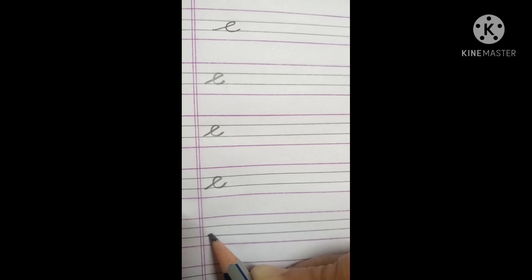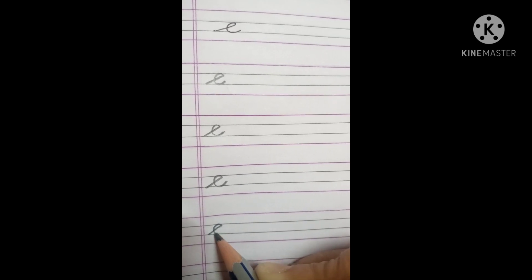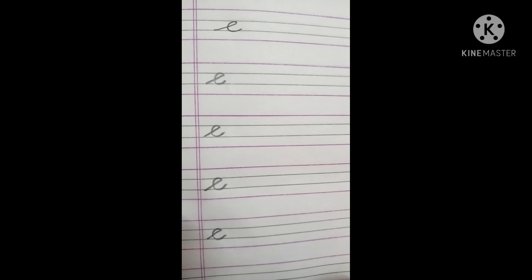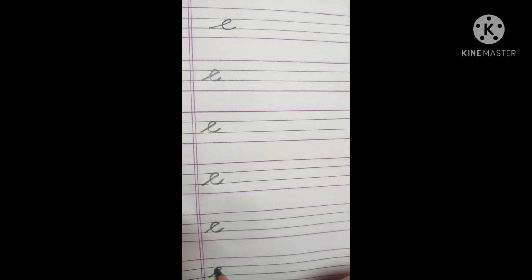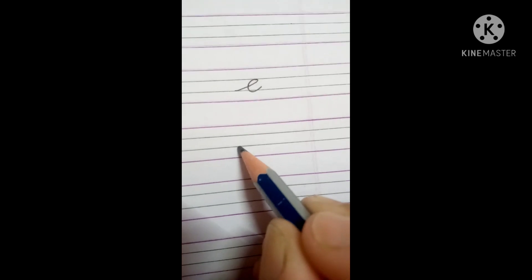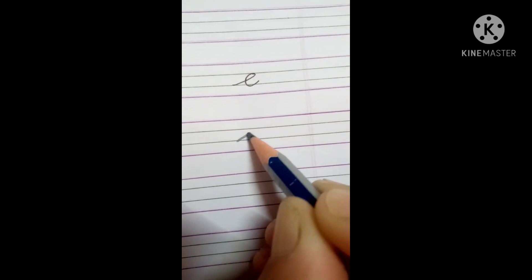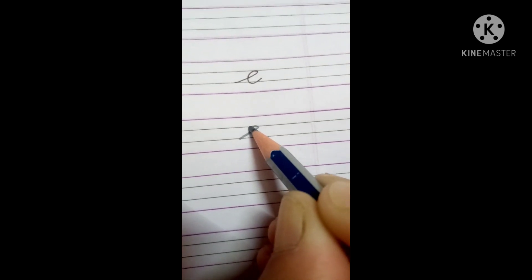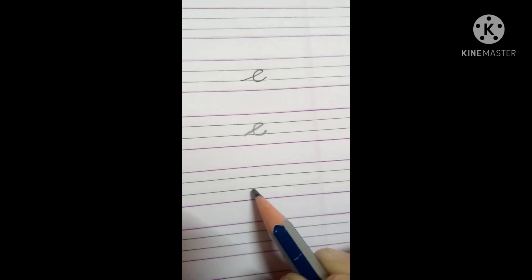Cursive letter E. Draw a little slanting line, take a turn, and make a curve. Just draw a small slanting line, take a turn, and make a curve.